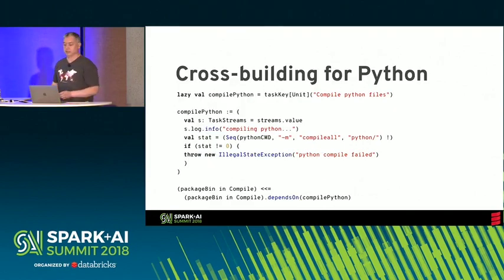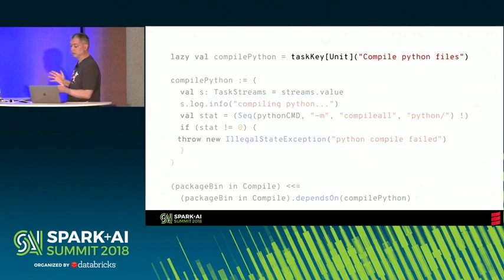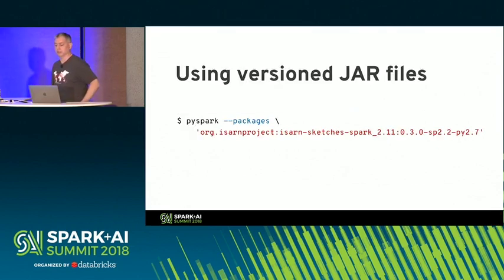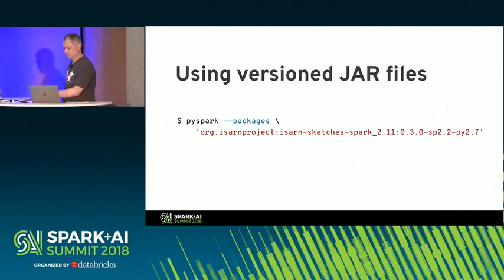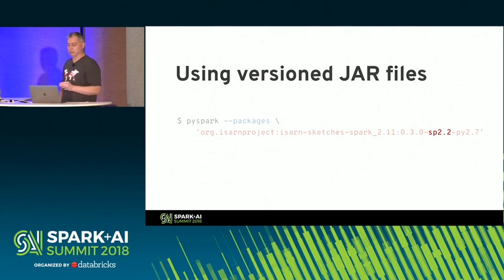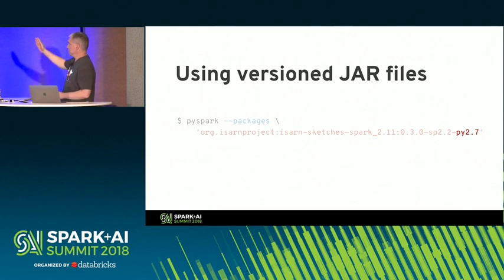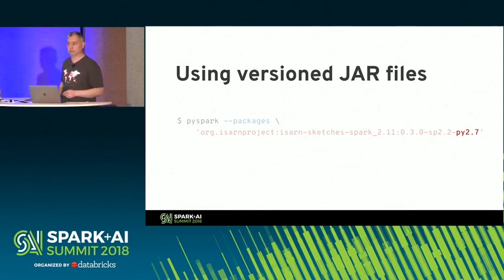In the SBT build system, add custom file mappings for compilation and packaging, mapping .pyc files from your repo into a corresponding jar path. At each level of this path, you need __init__.pyc files, even if almost always empty. You also need to teach SBT how to compile Python by creating a custom task with the actual commands for invoking a Python compiler. With this trick, users can supply a single --packages argument and use your library in either Spark or PySpark. The published version includes both the Spark version and the Python version used to compile the .pyc files.